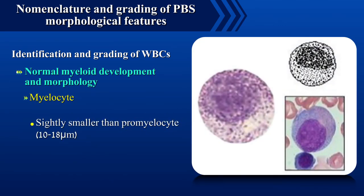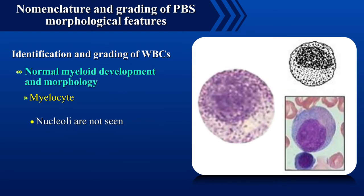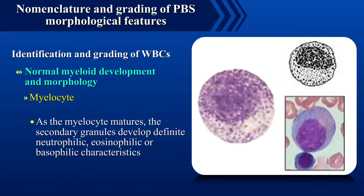Myelocyte is slightly smaller than promyelocyte with a diameter of approximately 10 to 18 microns with a round to oval nucleus which may be eccentrically placed. The nuclear chromatin shows a moderate degree of coarse clumping and nucleoli are not seen. There is a moderate amount of blue to pink cytoplasm which contains numerous red to violet granules. As the myelocyte matures, the secondary granules develop definite neutrophilic, eosinophilic or basophilic characteristics.